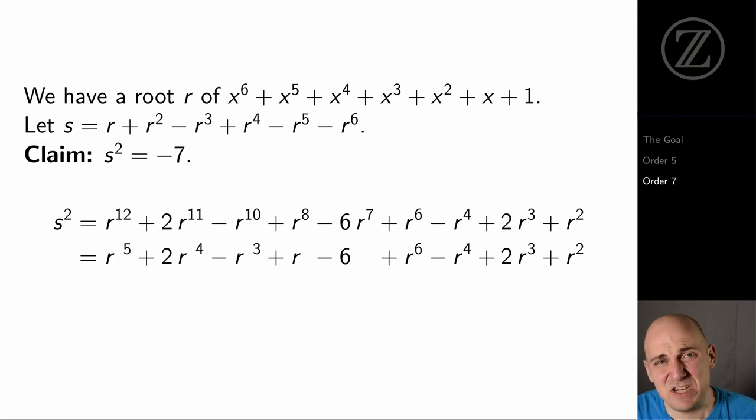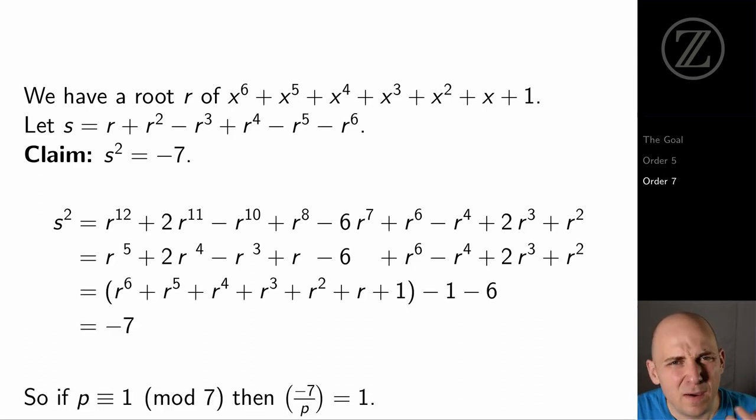And what we immediately can do here is replace r to the 7th with 1, because r is an element of order 7. So for example, I can reduce the exponent on r to the 12th. I can replace r to the 12th with r to the 5th because r to the 7th is 1. Now by combining terms with the same exponent, I end up getting r to the 6th plus r to the 5th plus blah, blah, blah, plus 1 minus 7. And that r to the 6th plus r to the 5th plus da, da, da, plus 1, that's 0. So all I'm left with is minus 7. And what we've shown is that s squared is negative 7. We've exhibited a square root of negative 7 in U_p.